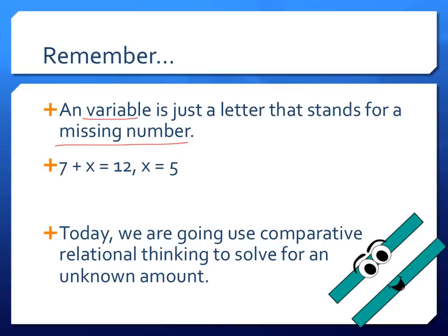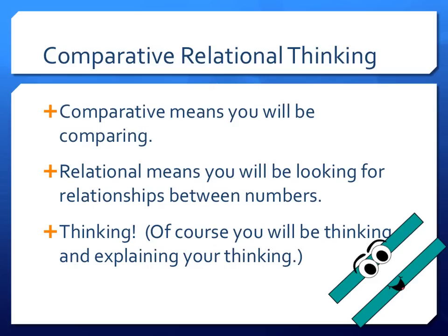You already know how to use comparative relational thinking to tell if an equation is true or false. Today you're going to use comparative relational thinking to solve for an unknown amount. Remember that you will be comparing the relationships between numbers and explaining your thinking for comparative relational thinking.